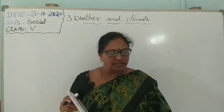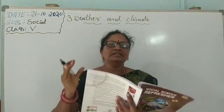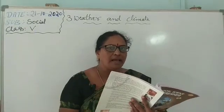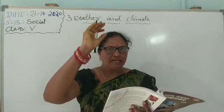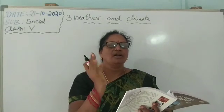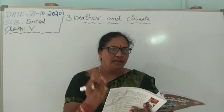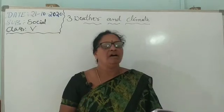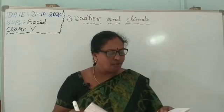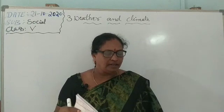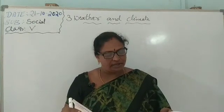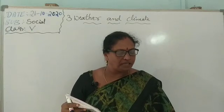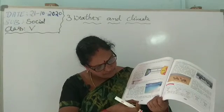The rays of the sun do not reach the earth at the same angle, because the earth is round in shape like a ball. The sun's rays fall at different angles on the earth. At the equator they fall vertically and directly, covering a small area. So the places nearer to the equator are hotter compared to places far away. You can see this on page number 30.